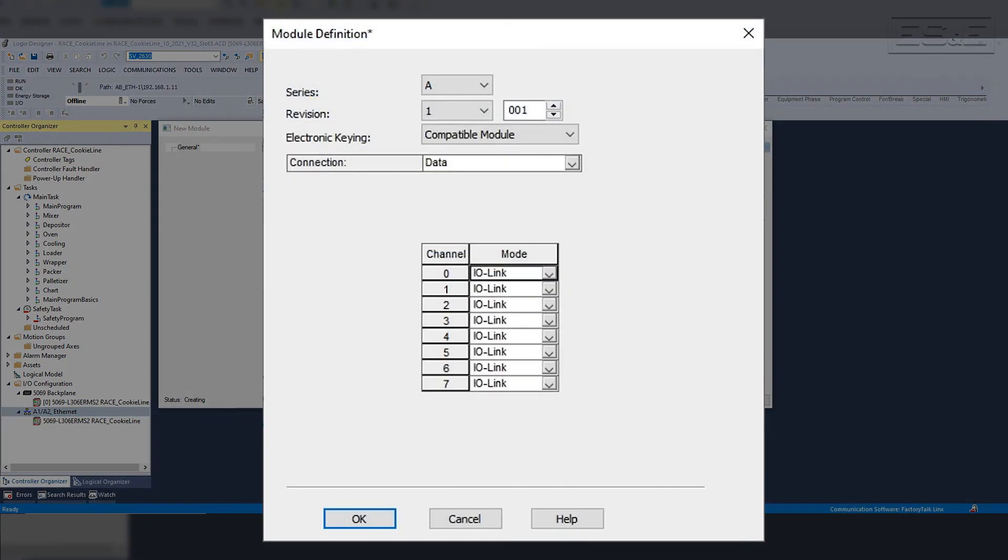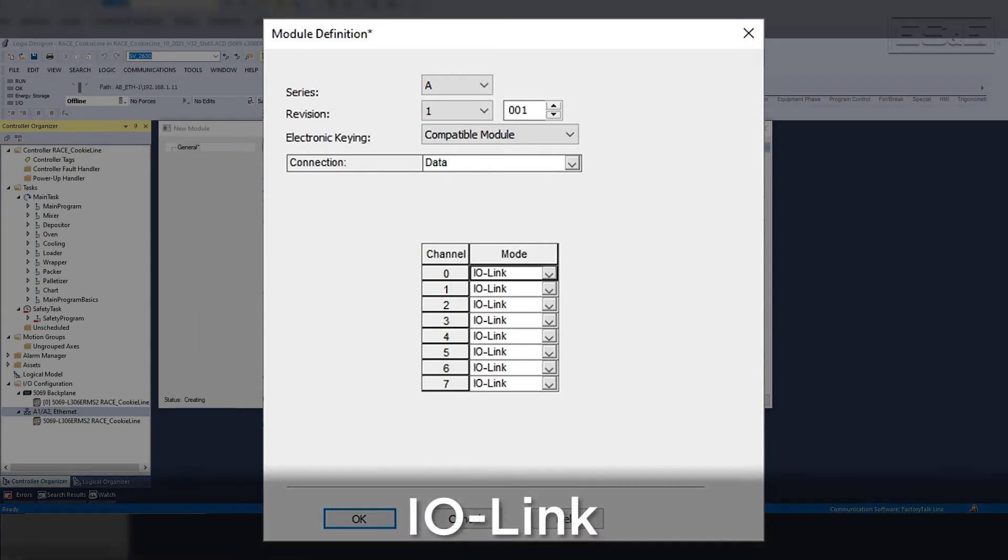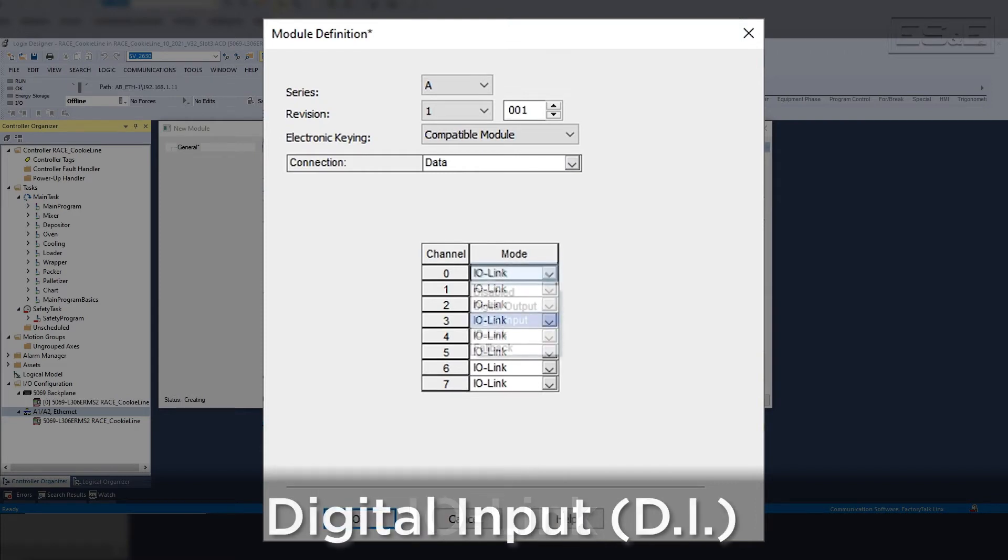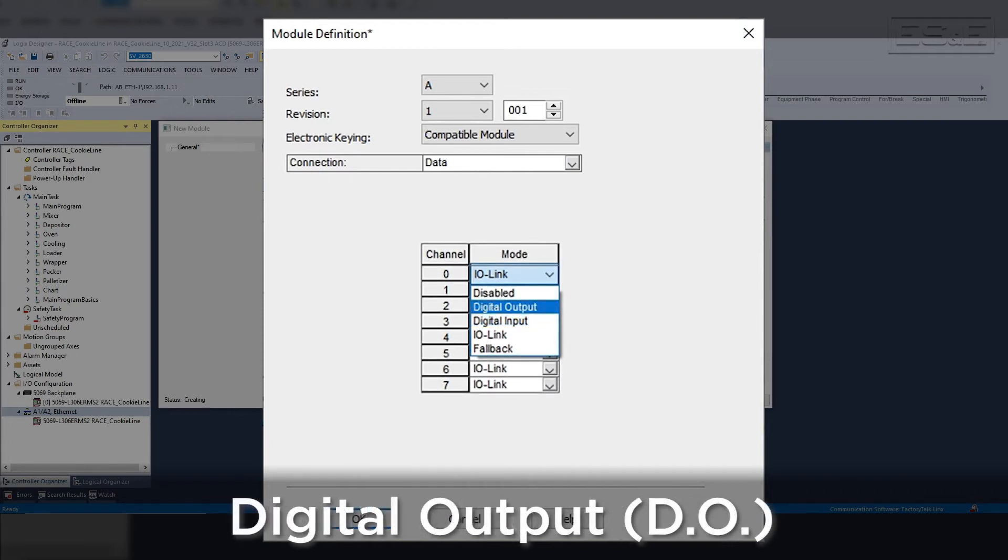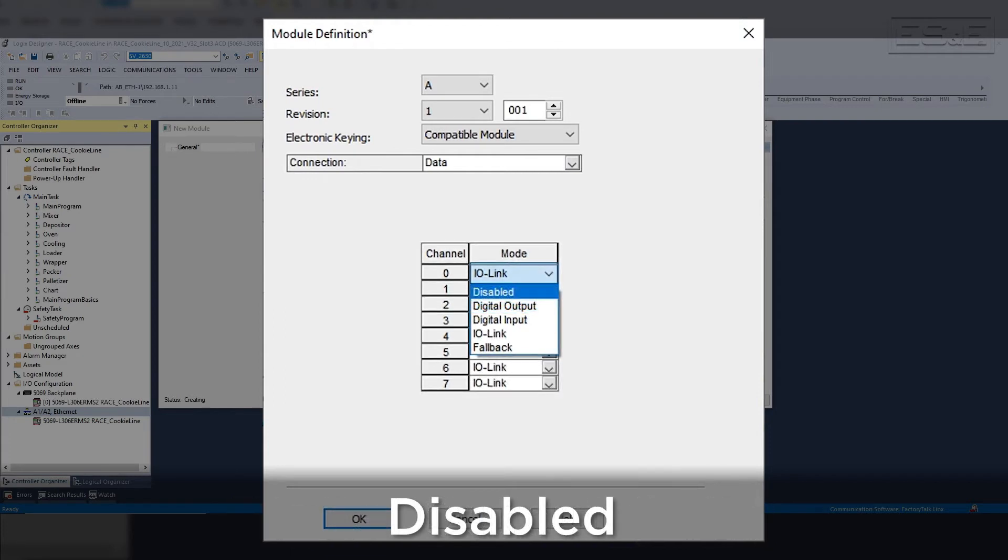Rockwell IO-Link Masters can be configured in one of five different modes. The first mode is the IO-Link mode, which means that the port is used for IO-Link communications. The second mode is DI, which means the port acts the same as a standard digital input device. The third mode is DO, which means that the port acts the same as a standard digital output device. The fourth mode is disabled, which means the port is not assigned to any mode.